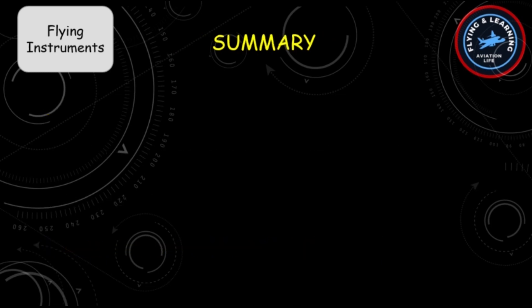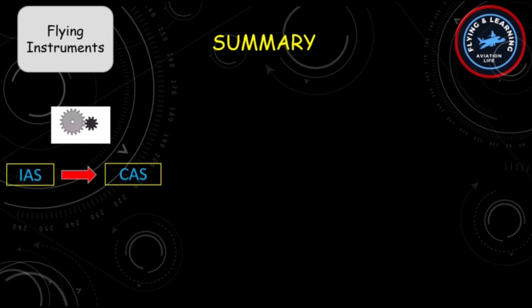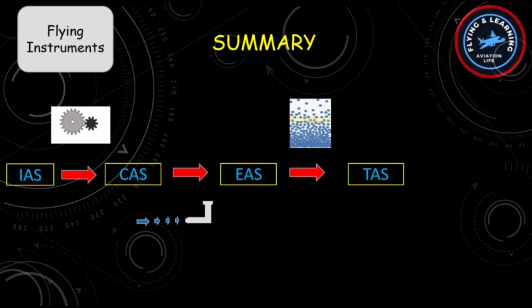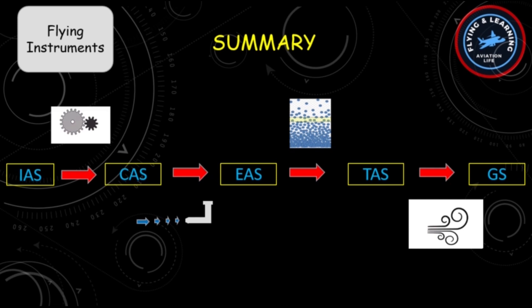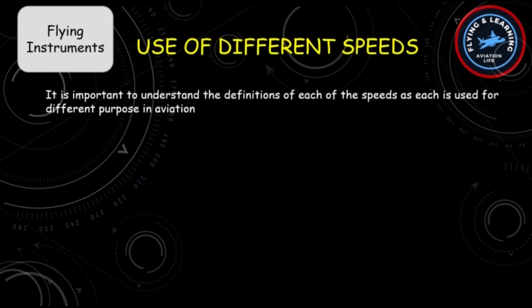Here is a quick summary: if we take indicated airspeed and correct it for instrument and position error, we get calibrated airspeed. If we then apply compressibility correction, we get equivalent airspeed. Applying density correction gives us true airspeed, and finally applying wind correction gives us ground speed.